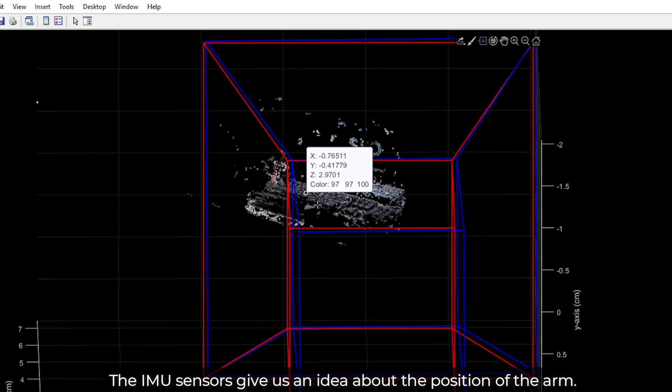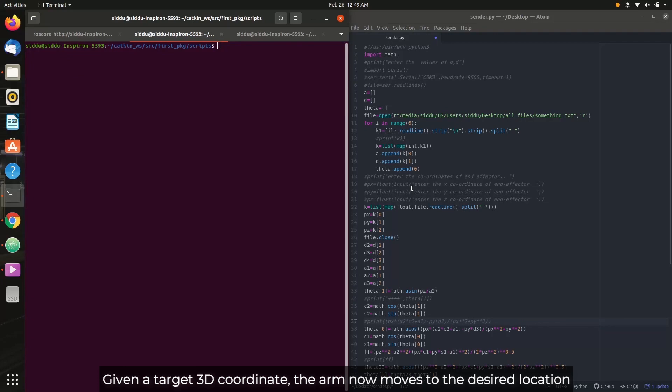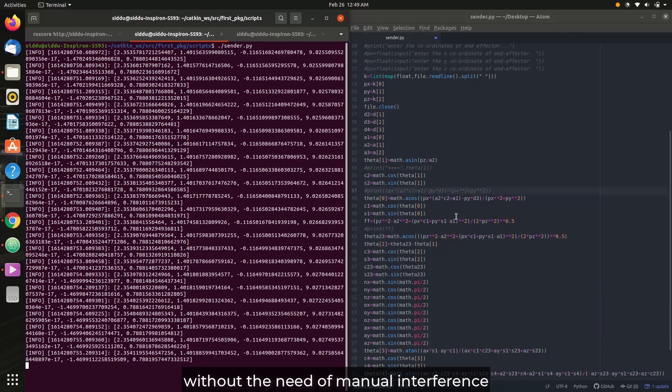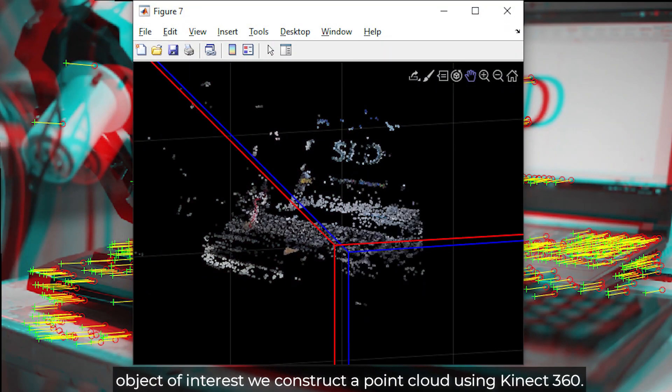The IMU sensors give us an idea about the position of the arm. Given a target 3D coordinate, the arm now moves to the desired location without the need for manual interference. To get the relative coordinates of the gripper of the robotic arm and object of interest, we construct a point cloud using Kinect 360.